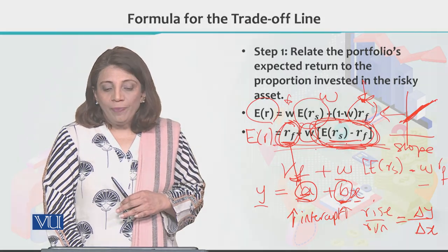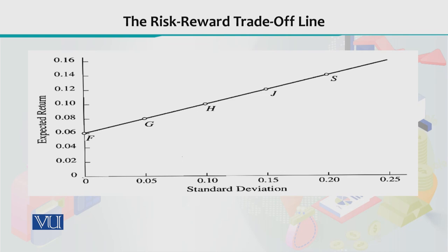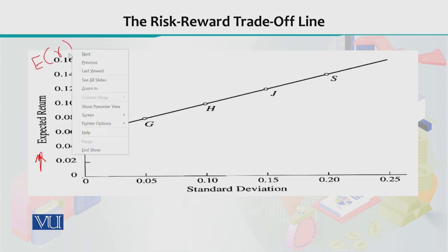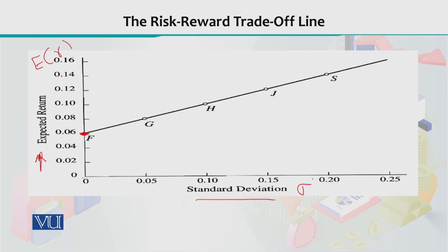I am going to show you the graph we discussed earlier. On the capital allocation line graph, expected return ER is on the vertical axis and standard deviation is on the horizontal x-axis. The formula of this line was also derived: expected rate of return equals RF, which is the intercept.